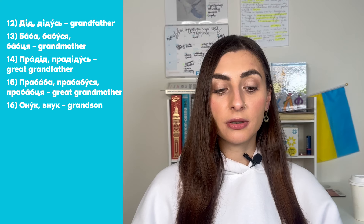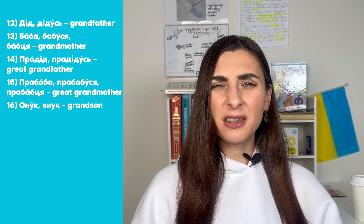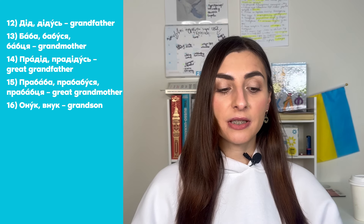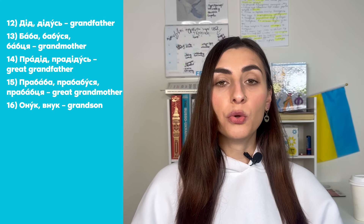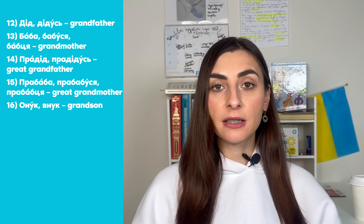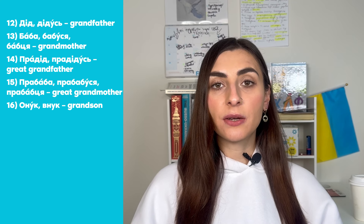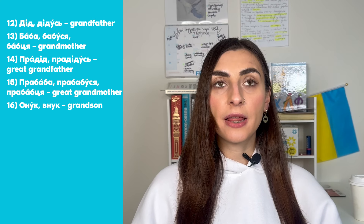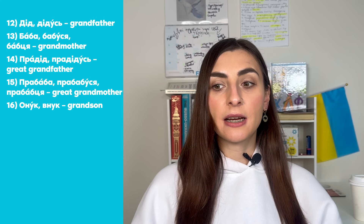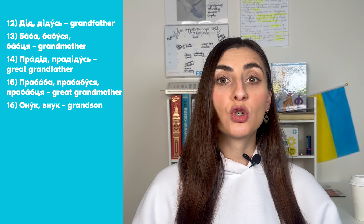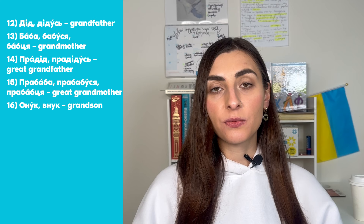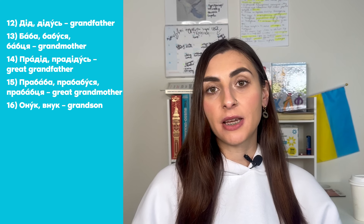Онук, or внук, means grandson. These are the same word — онук starts with a vowel, внук starts with a consonant. In Ukrainian, this kind of vowel-consonant alternation at the beginning of a word is common, depending on the word's position in the sentence. It is a matter of phonetics — for example, учитель and вчитель can be the same.